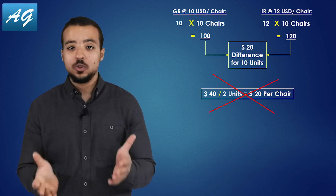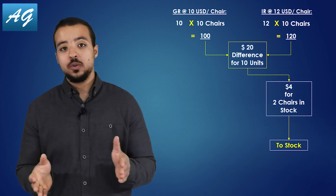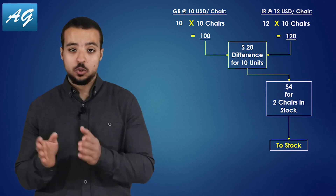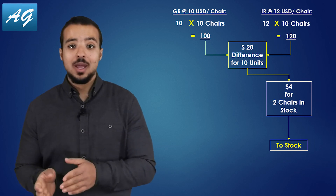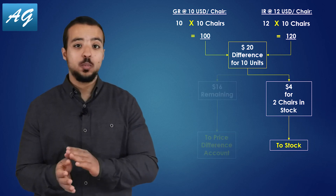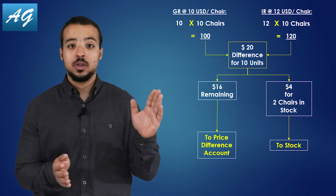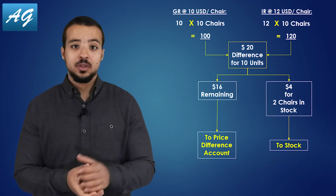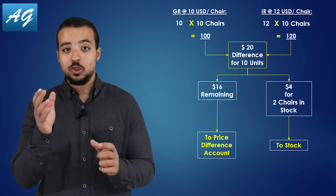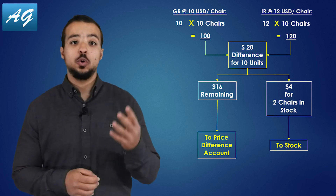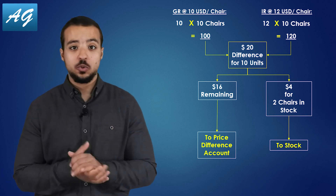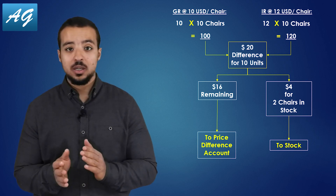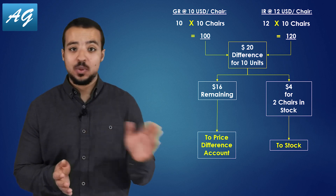We are going to solve this by only posting the difference related to the 2 units to our stock account, and the remaining difference we are going to post to another expense account that is not going to impact our moving average. In our example, the 20 USD relates to 10 shares, so we are going to post only 4 USD to the 2 units we have, and the remaining 16 USD is going to be posted to an expense account.